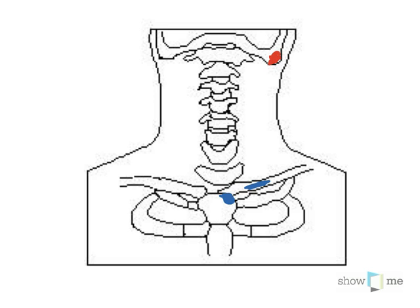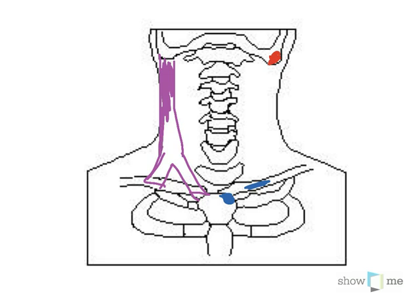I'm going to use purple to draw it on. We have one belly that comes off the sternum and another belly that contributes from the clavicle, and they come together. This muscle has a complex arrangement — a clavicular belly and a sternal belly — each with separate origins, and a shared insertion at the mastoid process.